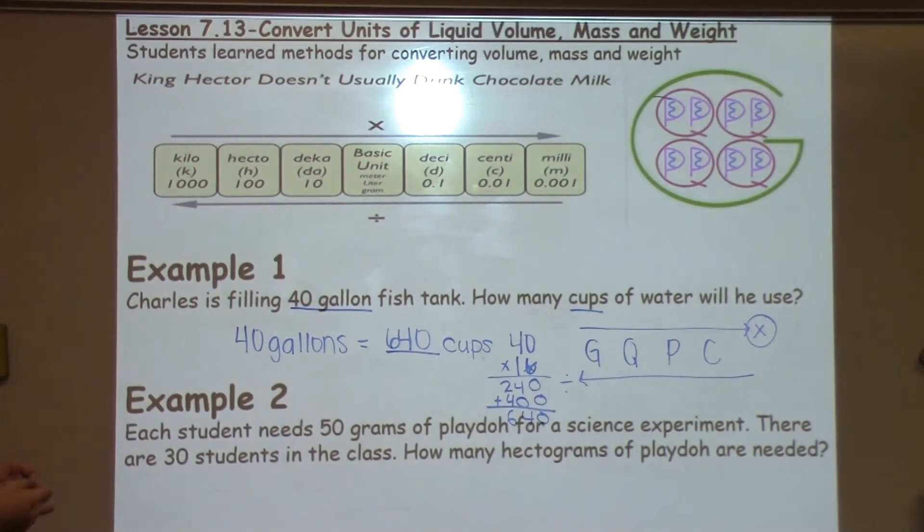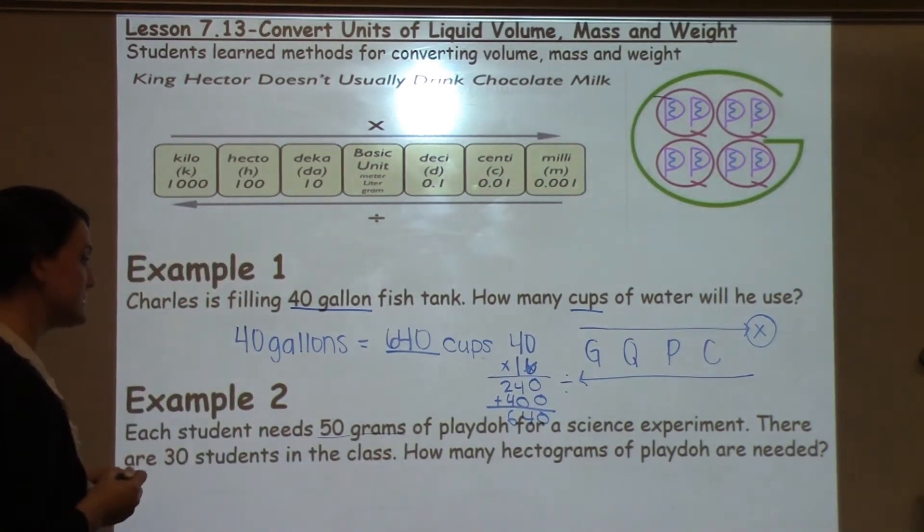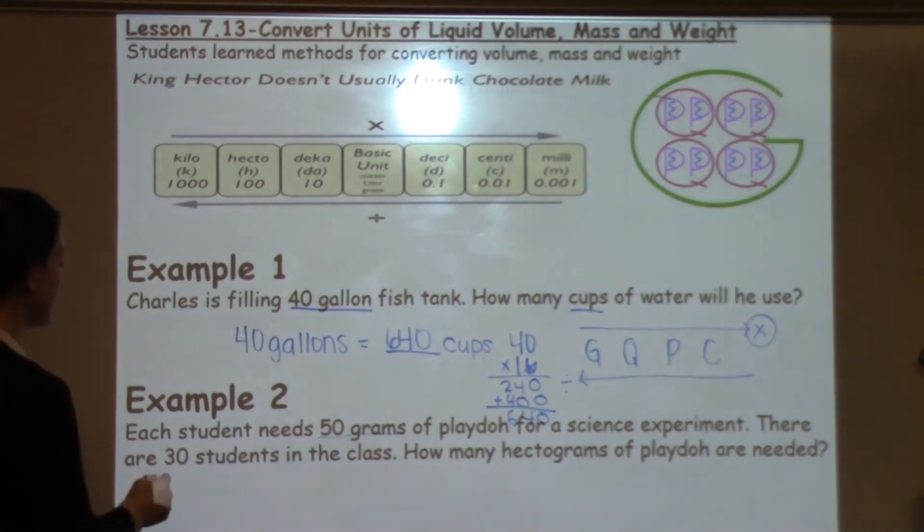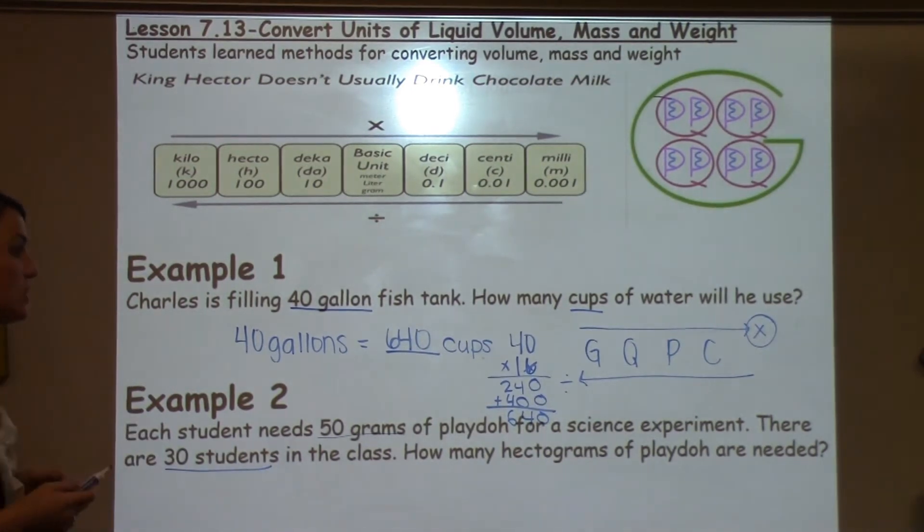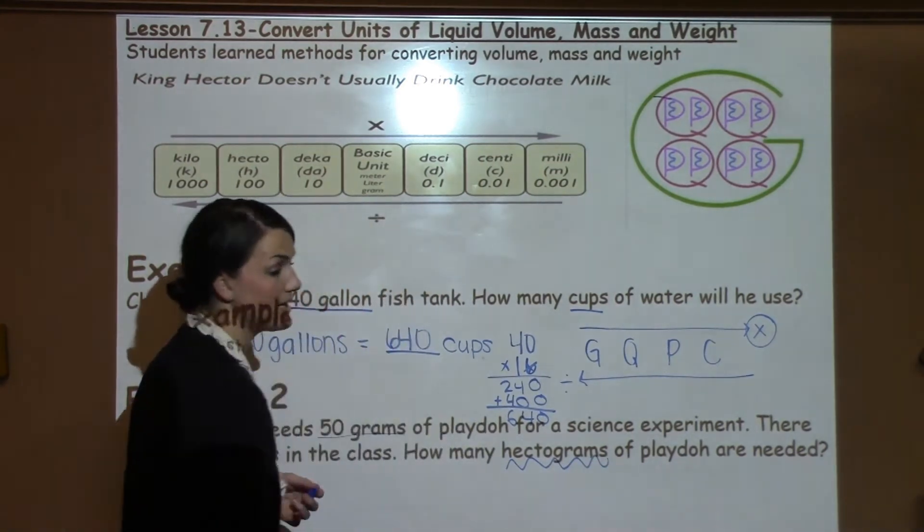Example 2 says each student needs 50 grams of play-doh for a science experiment and there are 30 students in the class. So how many hectograms of play-doh are needed?